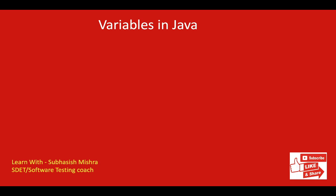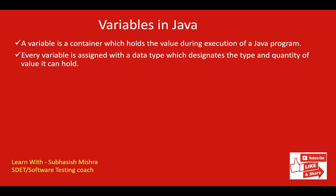Hey guys, this is Subhash Eshmishra, your test coach. Today we will learn about variables and data types in Java. So the first thing is: what is a variable? A variable is a container which holds the value during execution of a Java program.